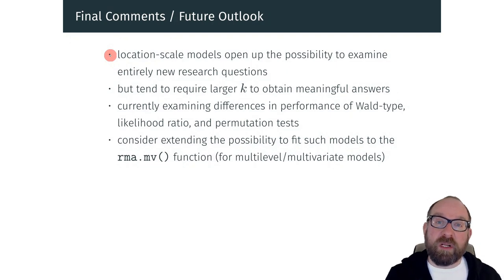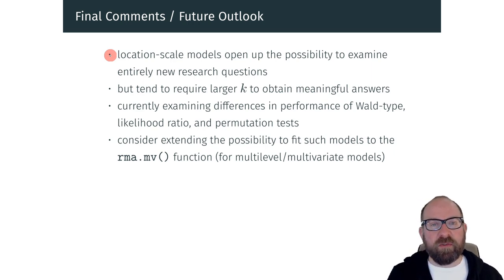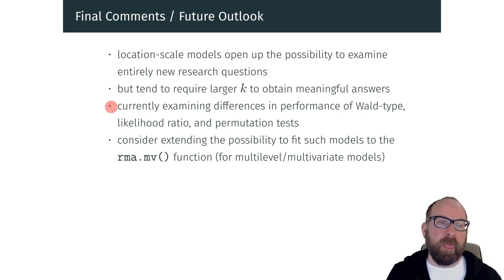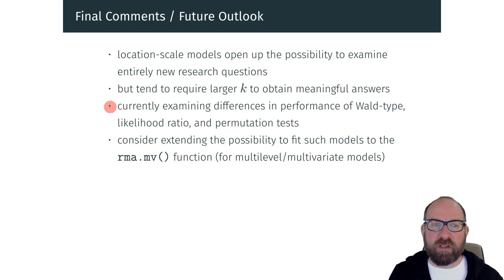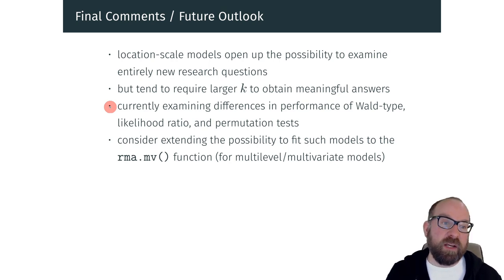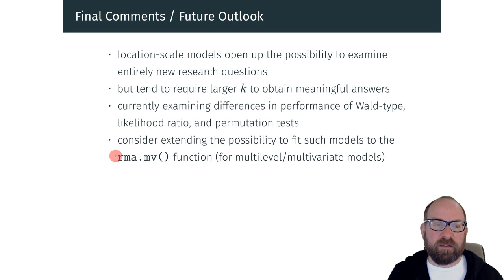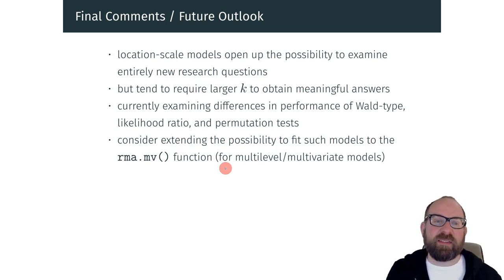These types of models open up the possibility to examine entirely new research questions — for example, comparing different types of interventions not only in terms of the average effect size they yield, but also in terms of the consistency of the effects. It should be pointed out that due to the increased complexity of these models, you tend to require a larger K or number of studies to obtain meaningful answers. Given the different types of tests for scale coefficients — Wald-type tests, likelihood ratio tests, and permutation tests — the question of which to pay most attention to is something we are currently examining in a simulation study. Finally, I am looking at the possibility to fit such models in the context of the rma.mv function from the metafor package, which is for multilevel and multivariate models, although that extension is not entirely trivial.